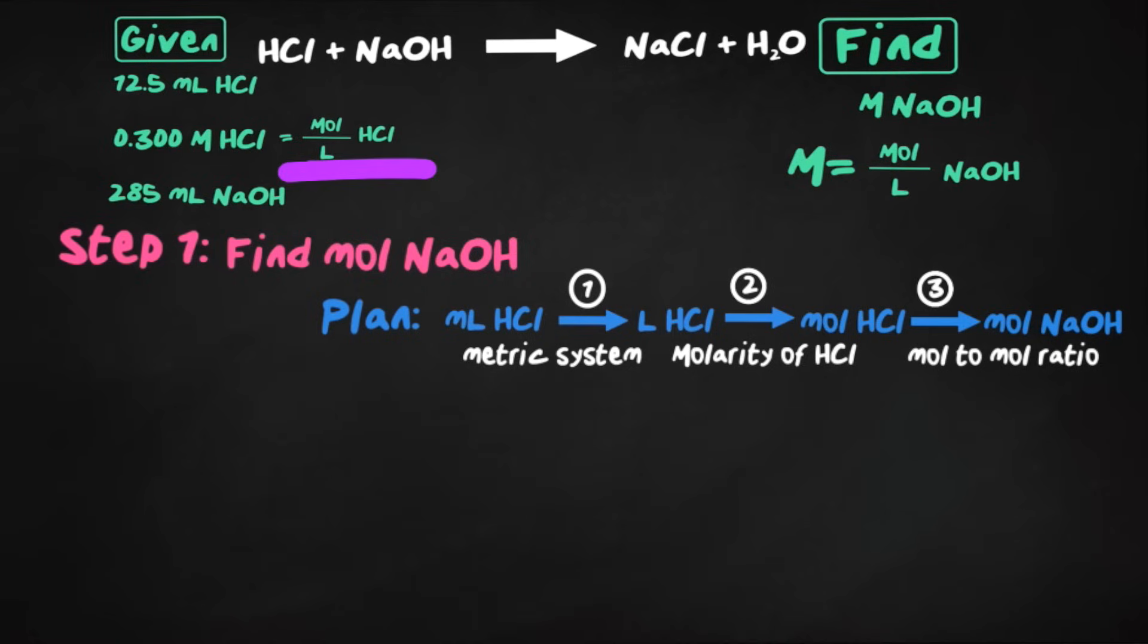Let's set this up. So starting with our 12.5 milliliters of HCl, let's align the milliliters of HCl so they can cancel. And our first step is to change this to liters of HCl using the metric system. So I'm going to put one milliliter on the bottom and 10 to the negative third liters on top of HCl. From here, our milliliters of HCl would then cancel, and we're at liters of HCl.